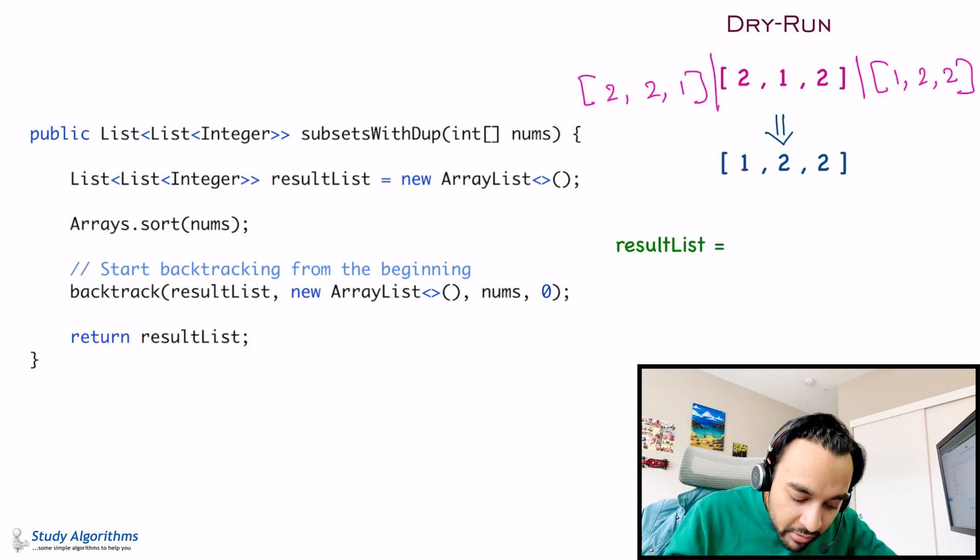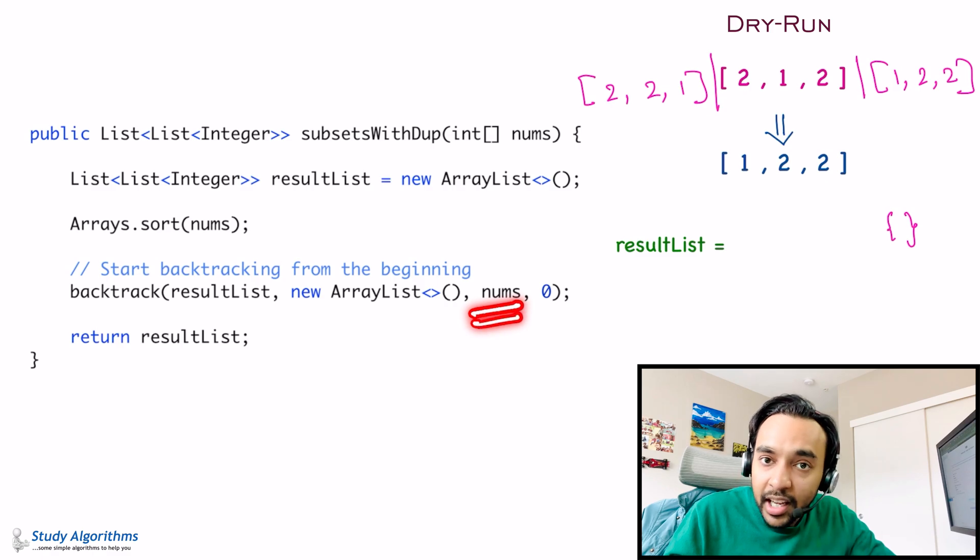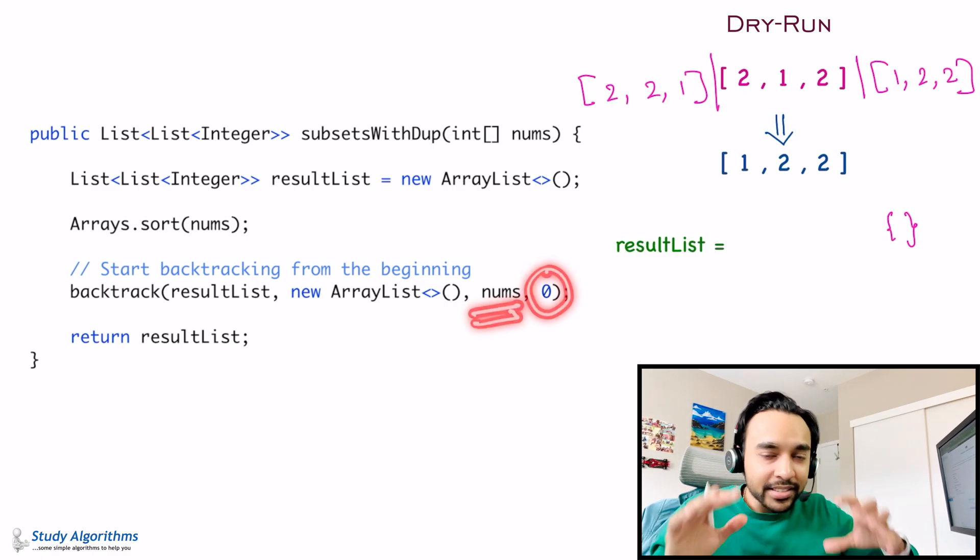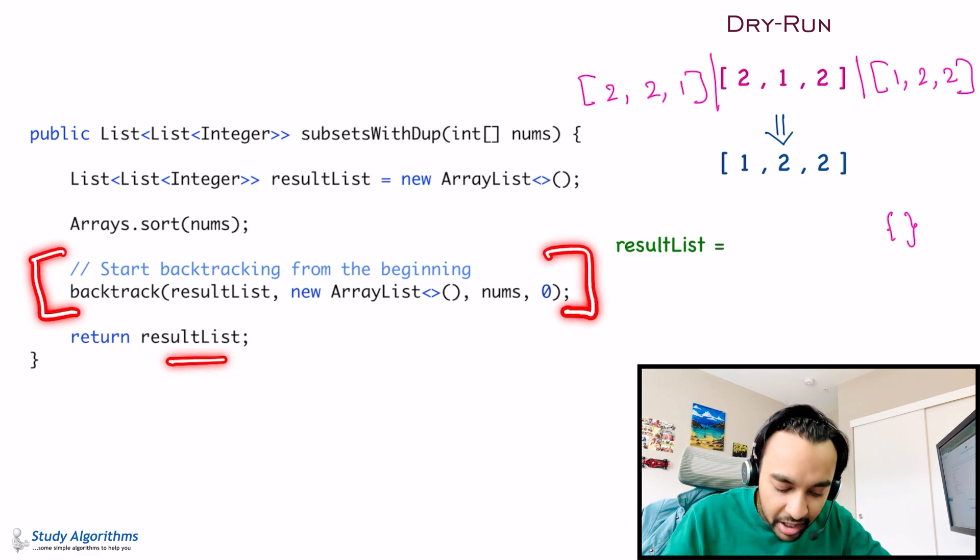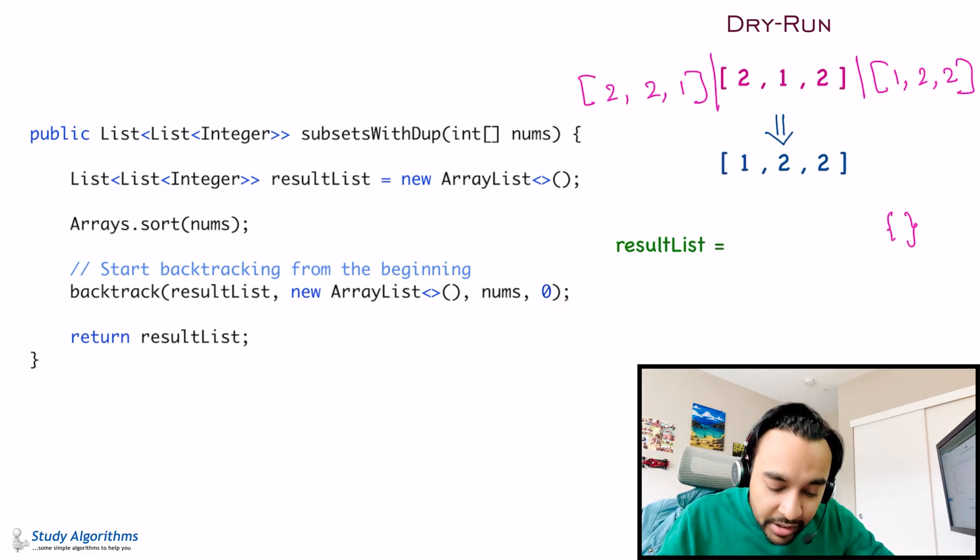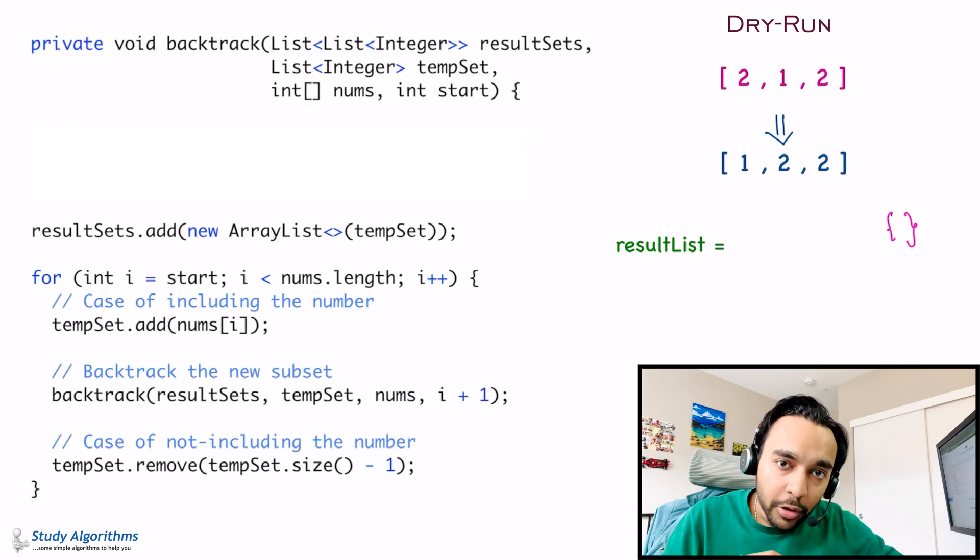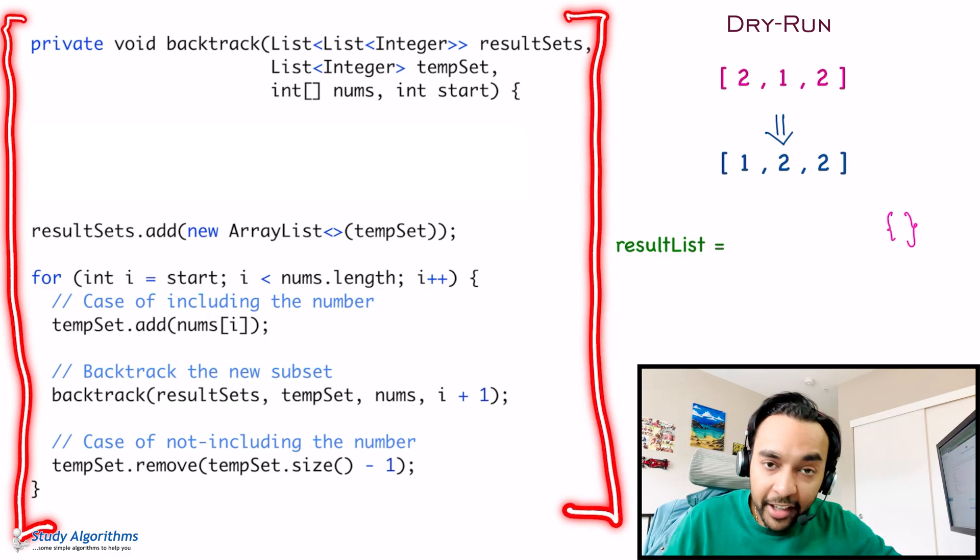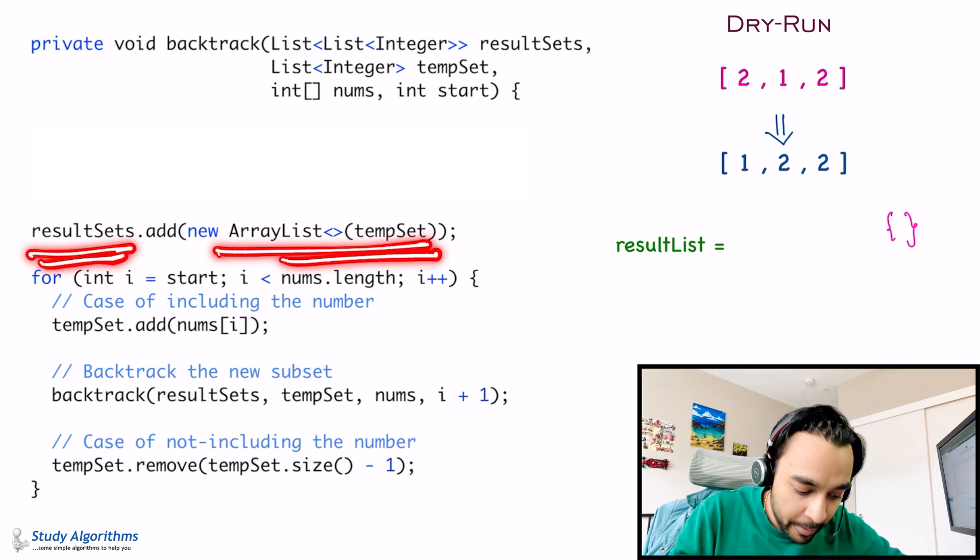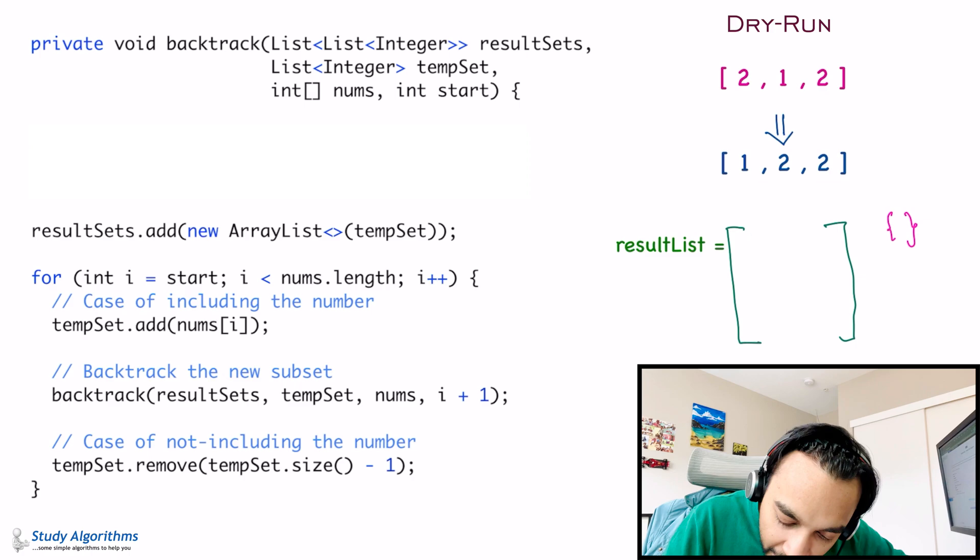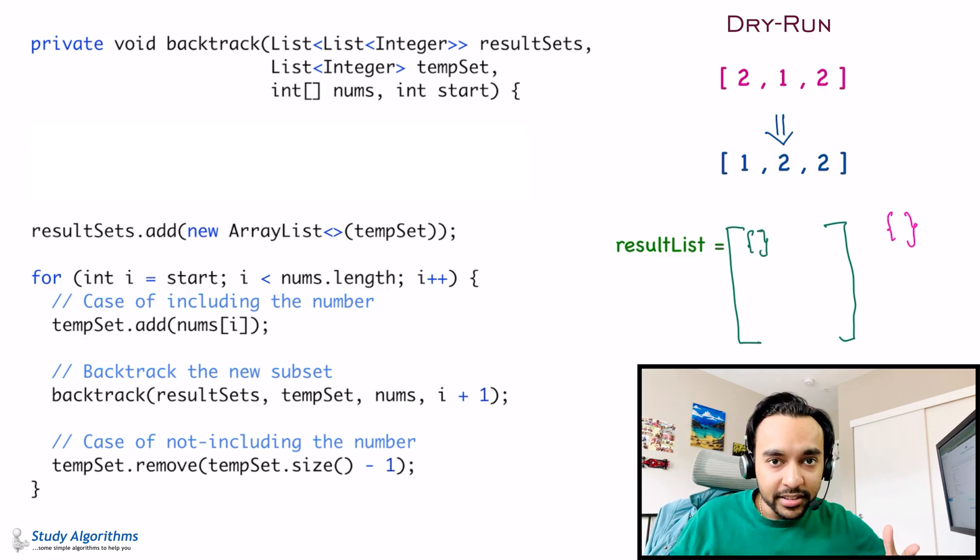So, now that we have this array, what we are going to do is, we are going to start backtracking. And to start our backtrack, what we are going to do? We will pass in this result list. We will start off with an empty array. So, this is my empty array that I am starting with. And I will pass in the entire array so that I can work with it. And this is my starting position. This is exactly same as the original problem subsets. Right? So, once all of this backtracking is complete, I will return my revolt list. Let us see now how this backtrack function looks like. If you notice, this method backtrack is exactly similar to the one that we had in our original problem subsets. Right?